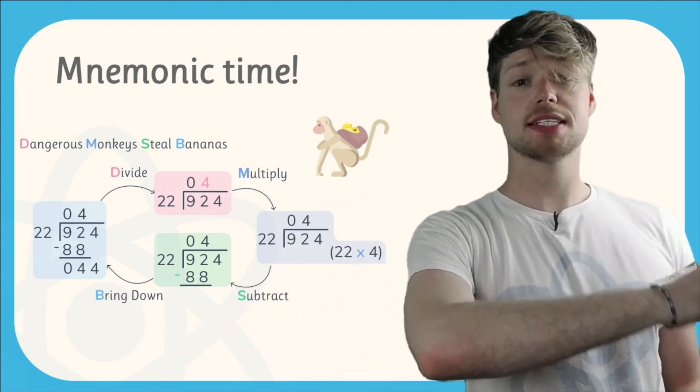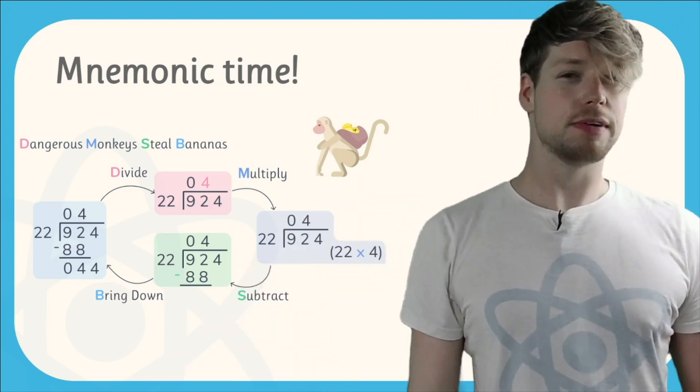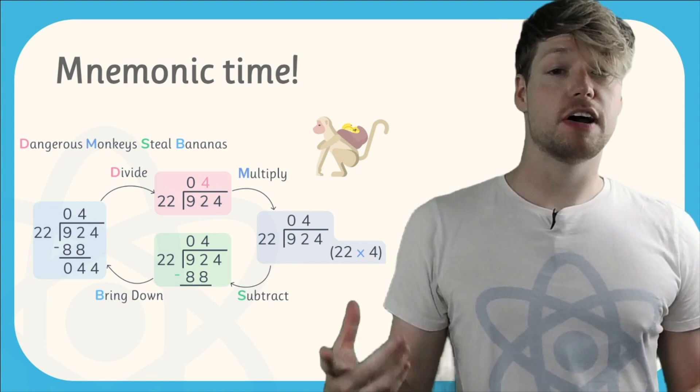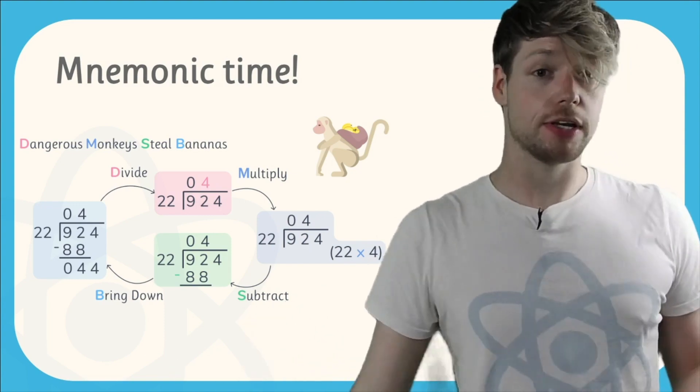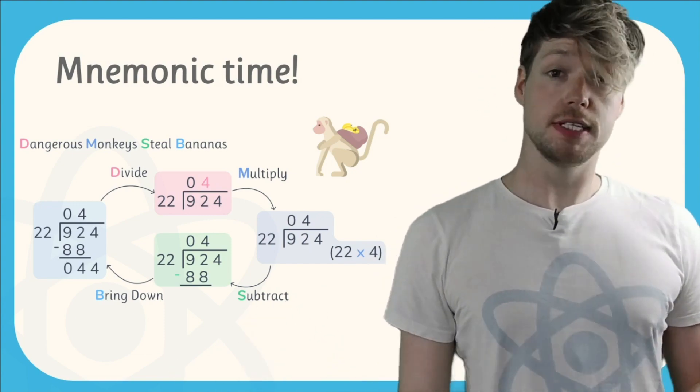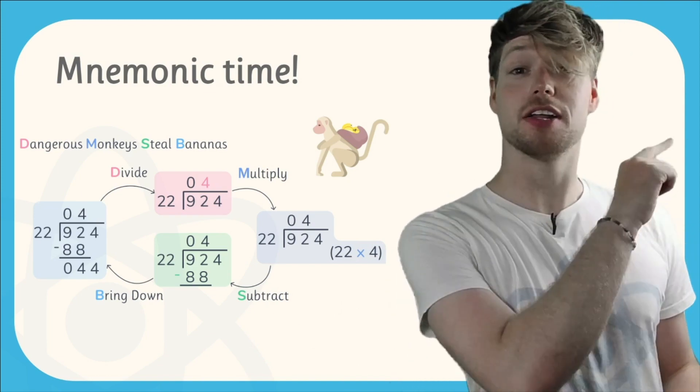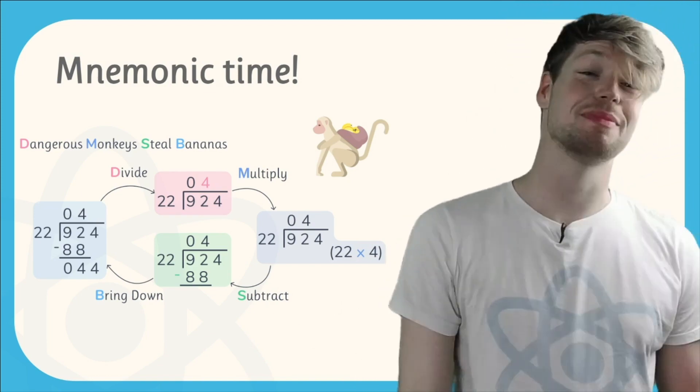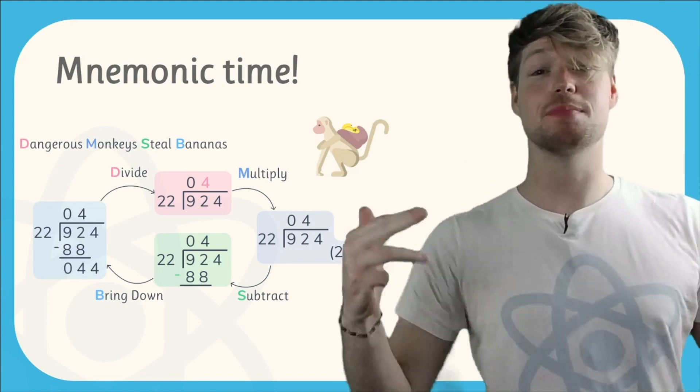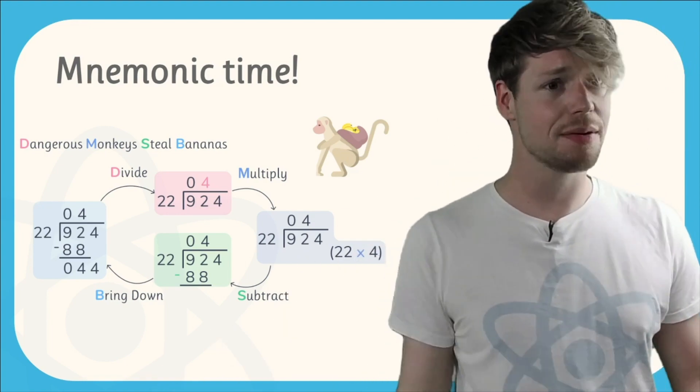We then just repeat that whole process again using that 44. Now that's quite easy. 44 divided by 22 is just 2. So our final answer would be 42. And we get there just by Dangerous Monkeys Steal Bananas twice. So that just means we divide, multiply, subtract, and bring down twice and we get to our answer.